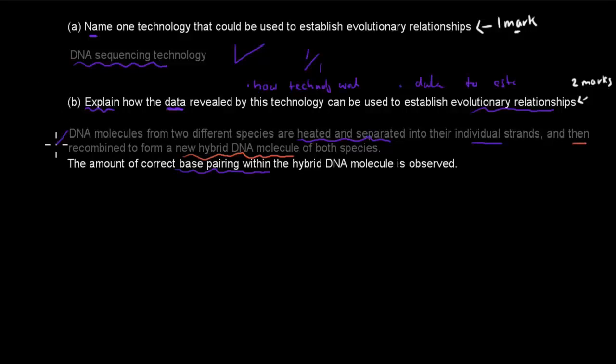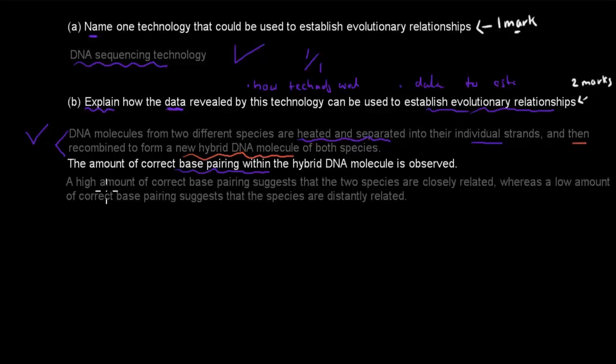And then what we still have to write, obviously, to talk about the actual relationships, how that can help us to establish our relationships. And that's what I wrote here. We've got a high amount of correct base pairing suggests that the two species are closely related. So if we have a high amount of correct base pairing, that means that they're closely related. Whereas a low amount of base pairing suggests that the species are distantly related. So you should make sure you write about what has to be the data for them to be closely related and distantly related. This will get your mark as well. And that's your two marks out of two.